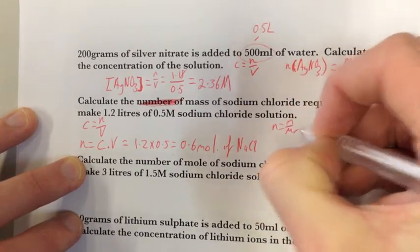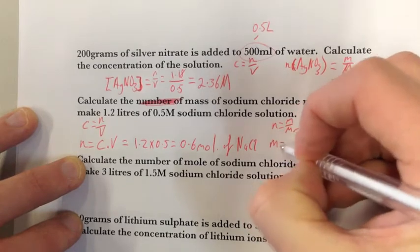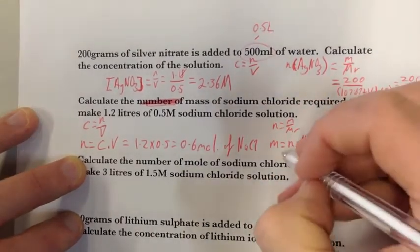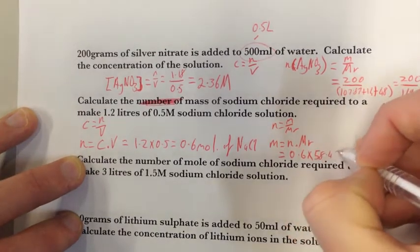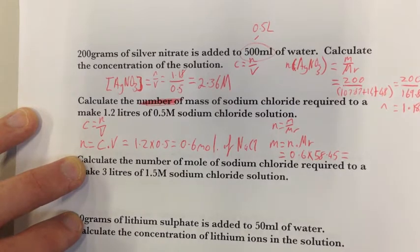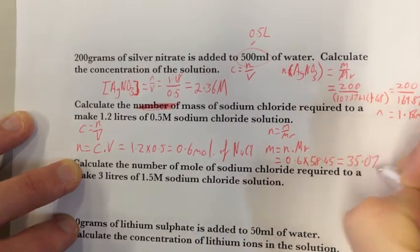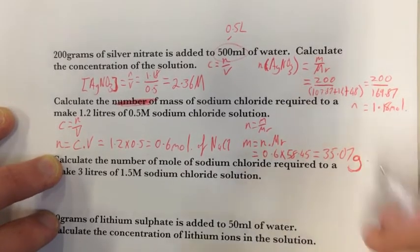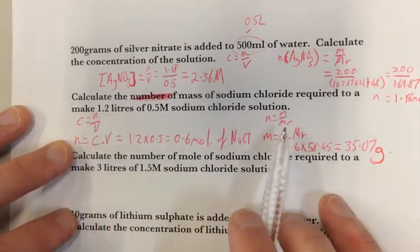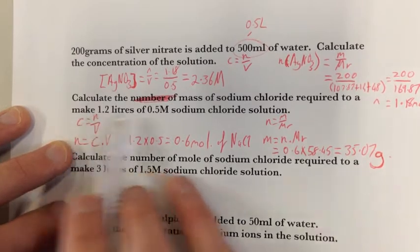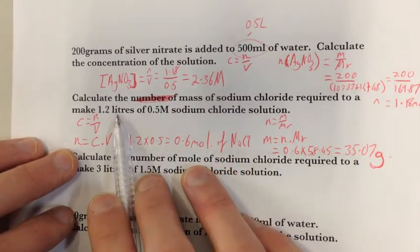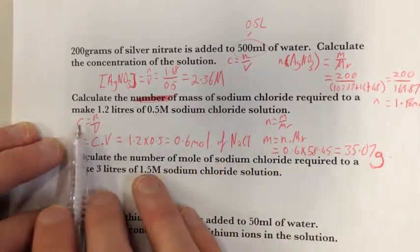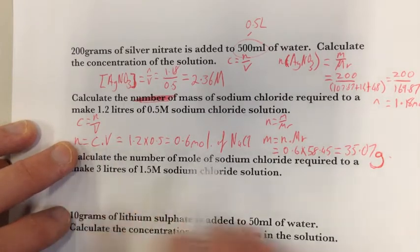I then use number of moles equals mass over molar mass, and rearrange to get mass equals number of moles times molar mass. So the mass of sodium chloride is 0.6 times the molar mass of sodium chloride, which is 58.45, equals 35.07 grams. Each time I write down my equation, think about what I need to calculate, rearrange if I need to, and so on and so forth.